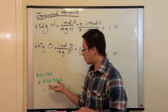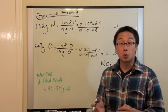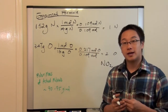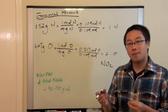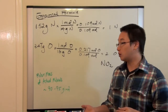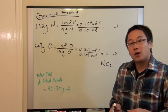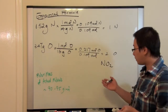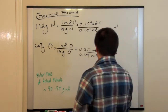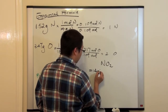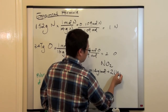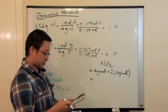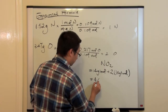The information given is that the molar mass of the actual molecule is between 90 and 95 grams per mole. What we do is use the relationship between the molar mass of the empirical formula and the molar mass of the actual molecular formula. First, we determine the molar mass of the empirical formula NO₂: nitrogen is 14 g/mol, plus 2 oxygen atoms at 16 g/mol each, giving 14 + 32 = 46 grams per mole.